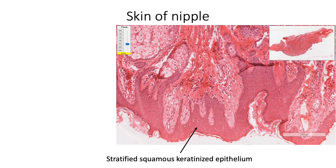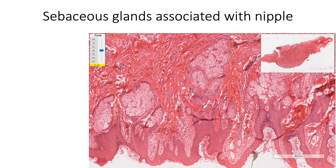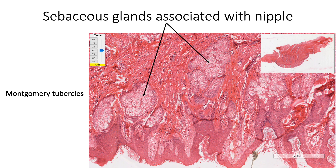As this epithelium is highly wrinkled, it is associated with the presence of long dermal papillae. Numerous sweat and sebaceous glands open directly on the surface of the nipple. Oily secretions from the sebaceous glands, as seen here, act as a protective lubricant. These glands become visible as Montgomery tubercles on the surface of the areola in pregnant women.